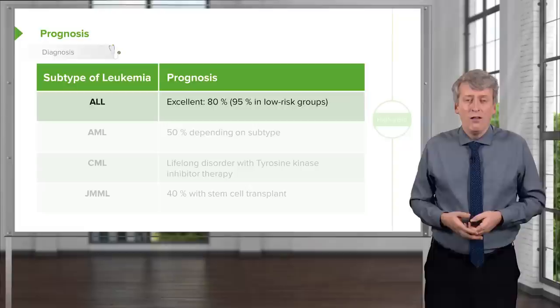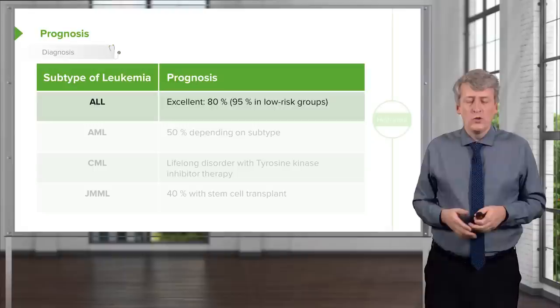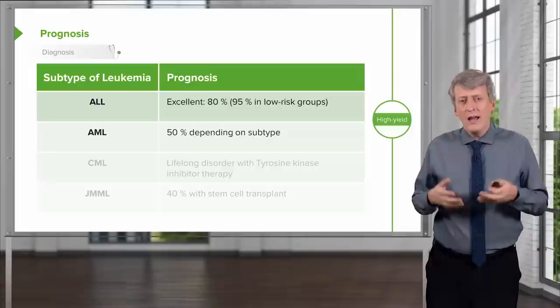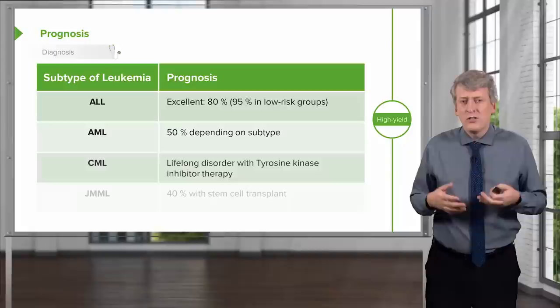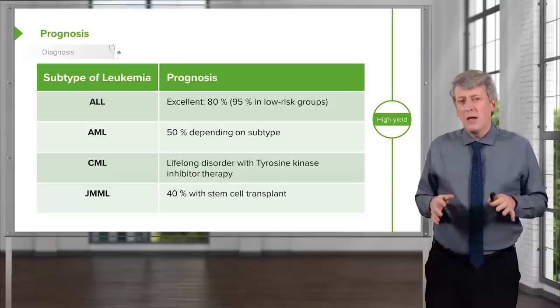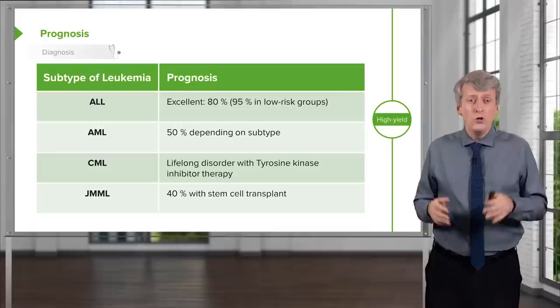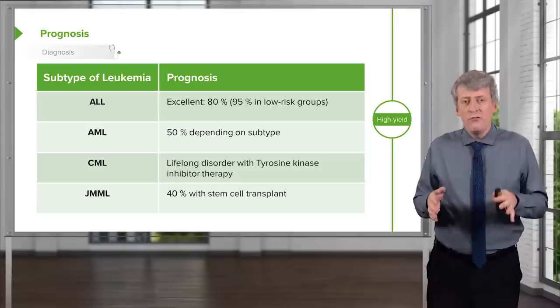What's the prognosis for these patients? Surprisingly good for ALL — more than 80% and even as high as 95% of patients in low-risk groups will survive, which is a great accomplishment in pediatrics. For AML, it depends on the subtype but is probably around 50% survival. For CML, it is a lifelong disorder managed with tyrosine kinase inhibitor therapy. For JMML, survival is about 40% with a bone marrow transplant. But in general, most children have ALL and most have a pretty good prognosis. That's the review of leukemia in children.